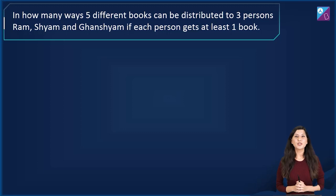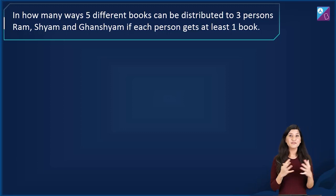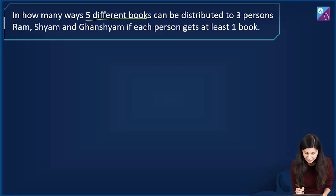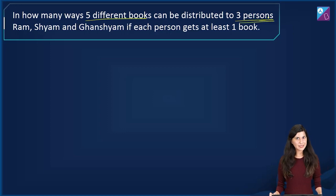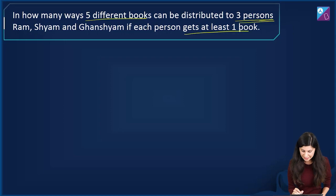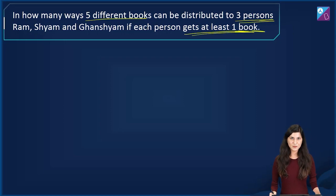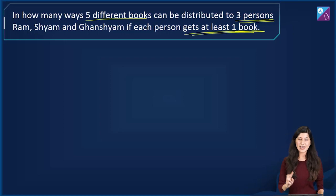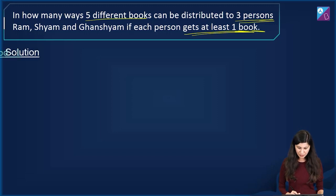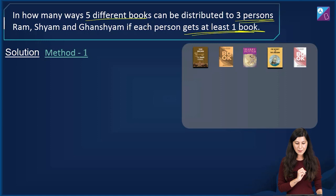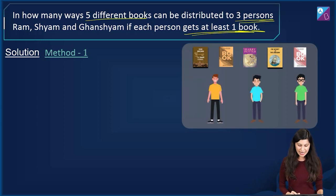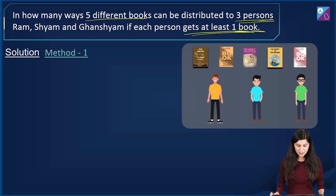Let's move on to the second question: in how many ways can 5 different books be distributed to 3 persons — Ram, Shyam and Ghanshyam — if each person gets at least 1 book? For this question I have 2 different methods.